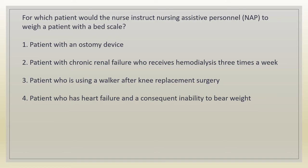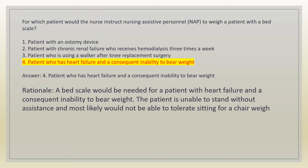For which patient would the nurse instruct nursing assistive personnel to weigh a patient with a bed scale? 1. Patient with an ostomy device. 2. Patient with chronic renal failure who receives hemodialysis 3 times a week. 3. Patient who is using a walker after knee replacement surgery. 4. Patient who has heart failure and a consequent inability to bear weight. Answer: 4. Rationale: a bed scale would be needed for a patient with heart failure and a consequent inability to bear weight, as the patient is unable to stand and most likely could not tolerate sitting for a chair scale.